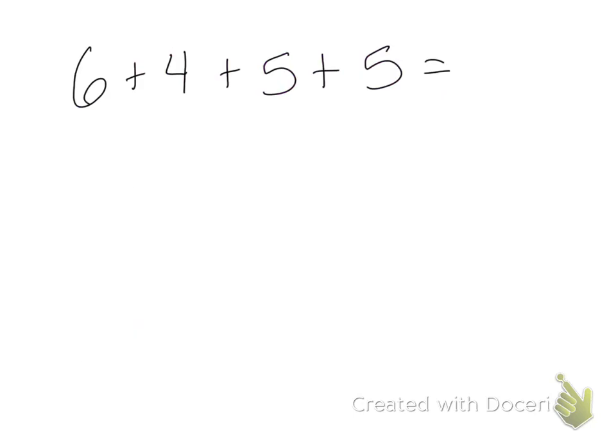Let's practice another one. Here I have 6+4+5+5. So we find our 10s first. 6+4 equals 10. And 5+5 equals 10. So now I can just add together 10+10, which I know equals 20.